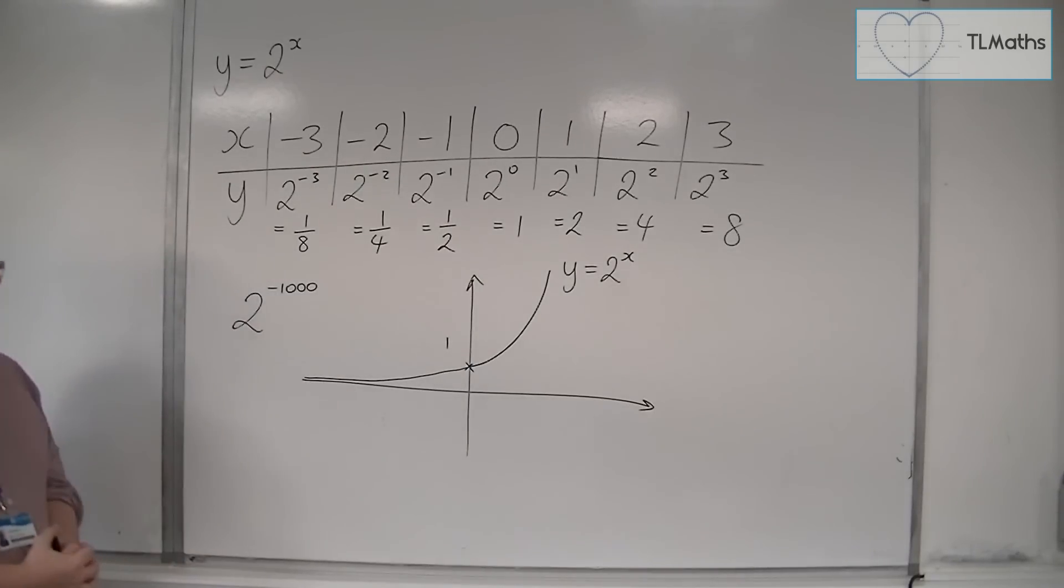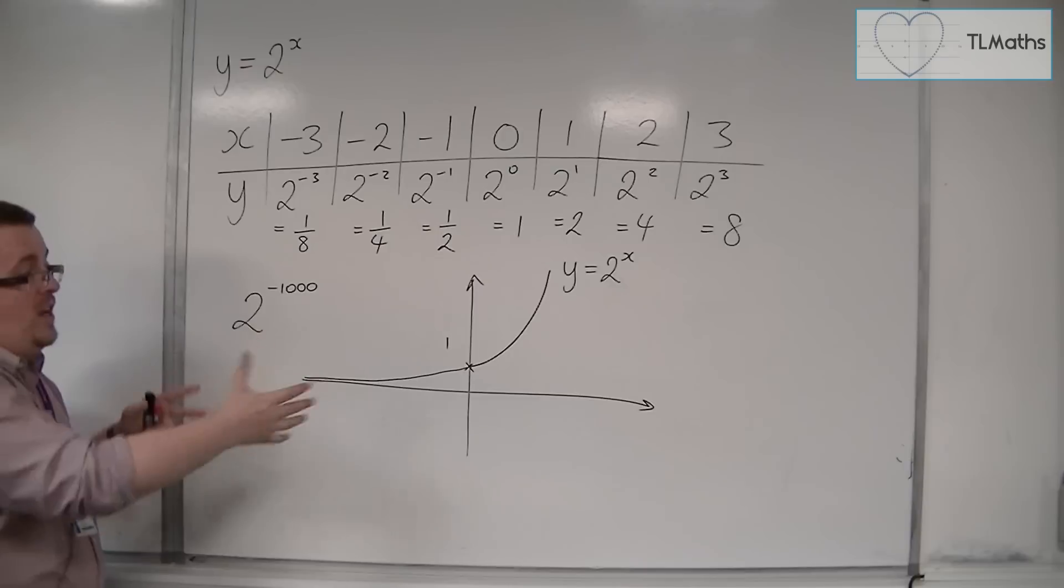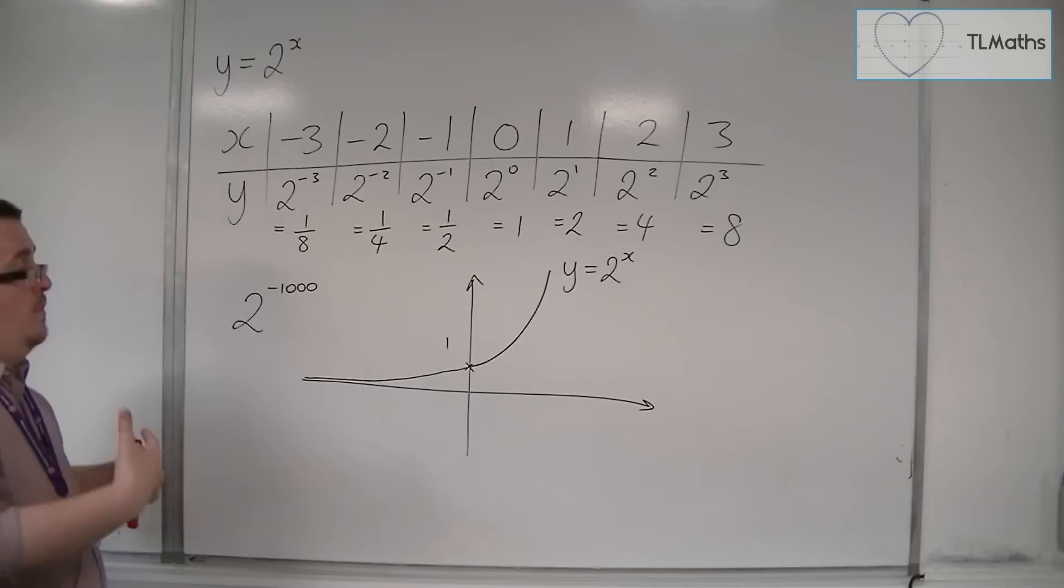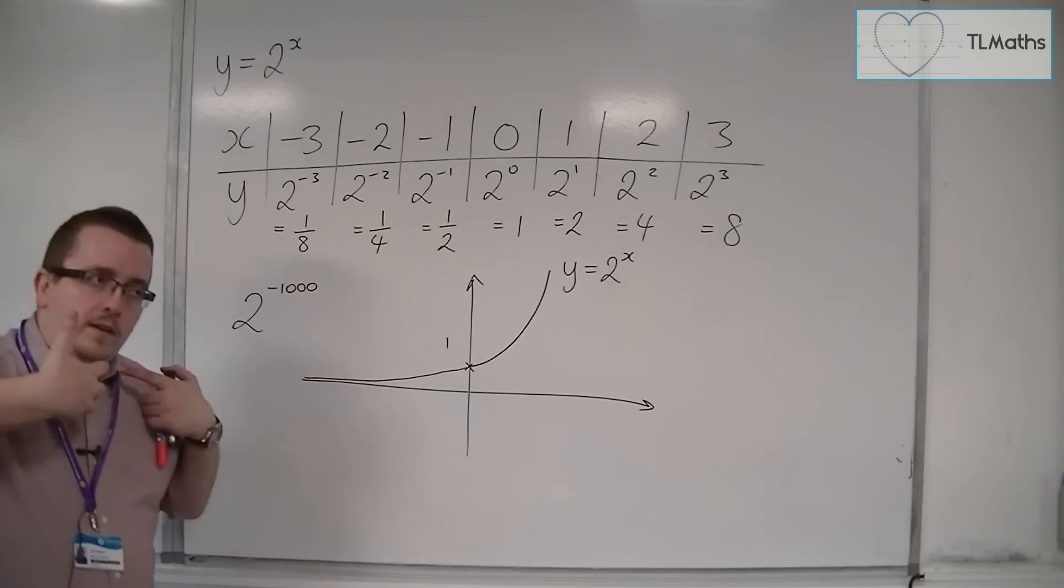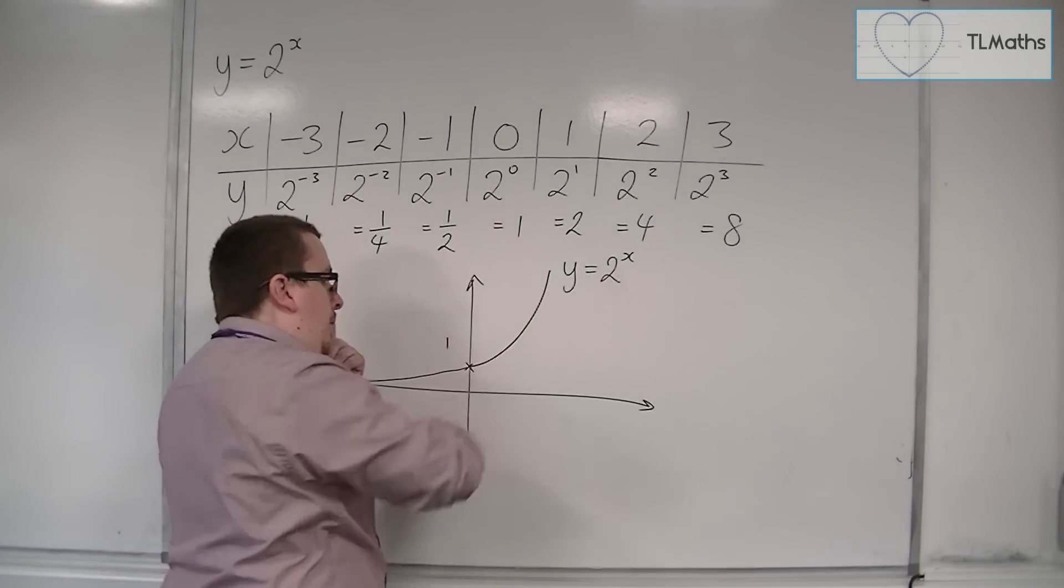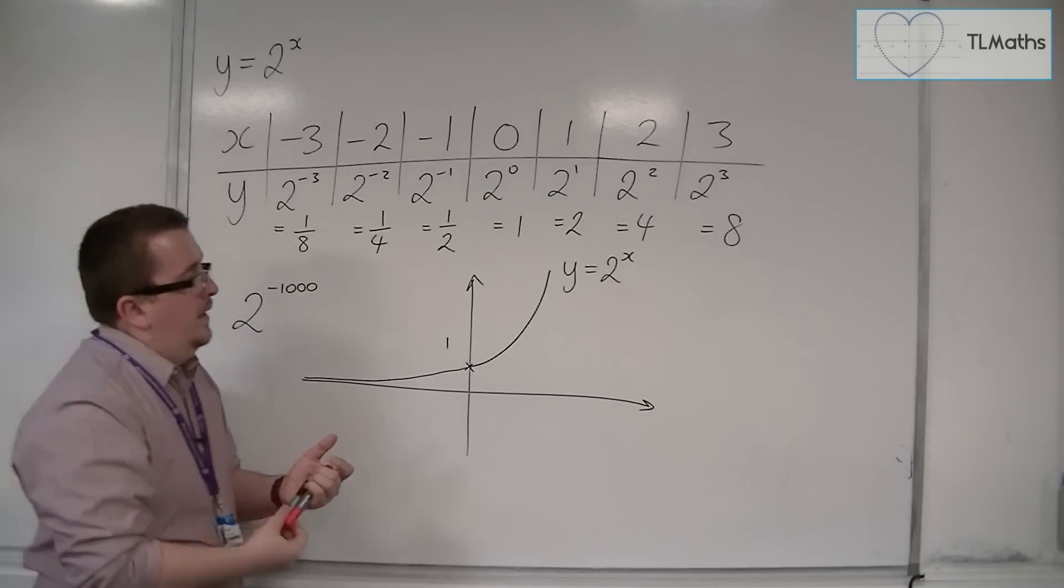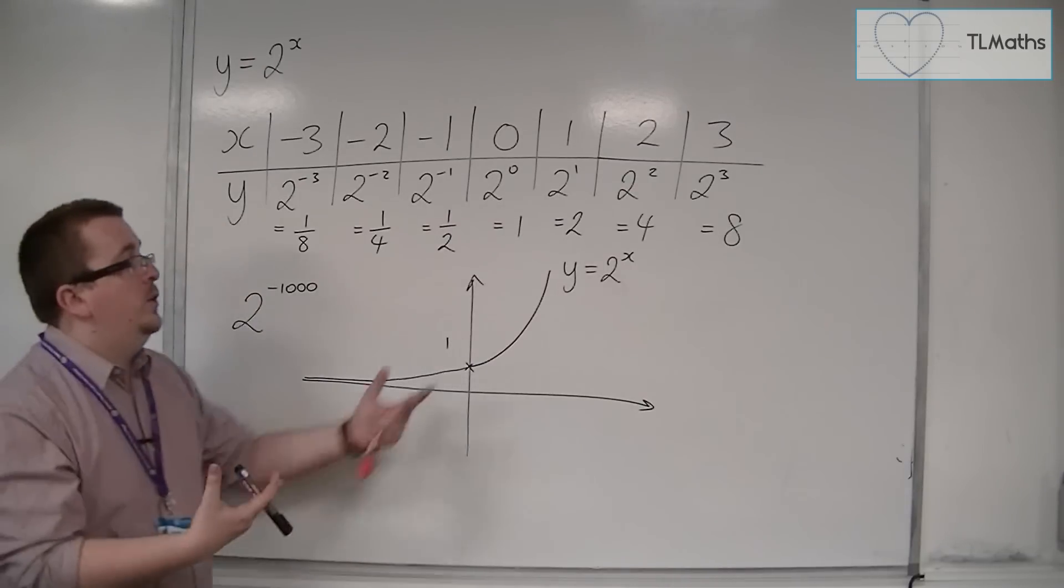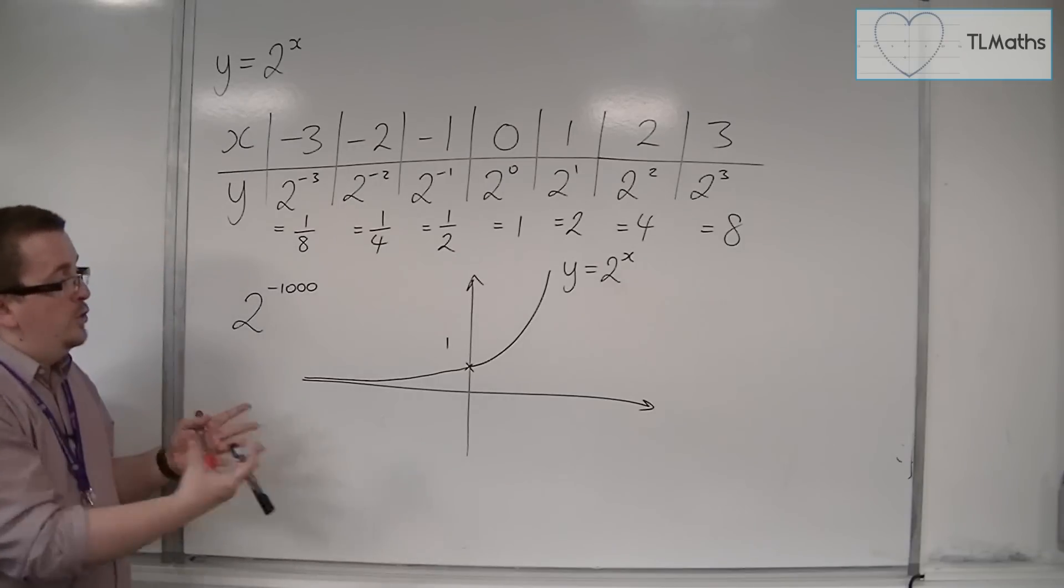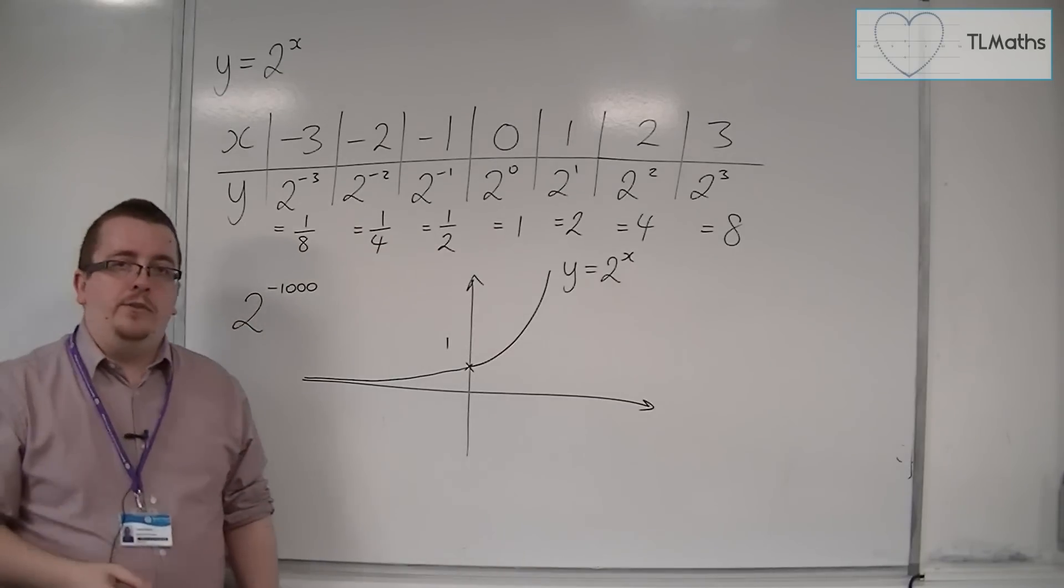So it'll never cross the x-axis. This is a generic shape for what we refer to as exponential curves. You might have heard of the idea of something increasing exponentially quickly. This is the concept of how the curve increases very quickly. These exponential curves, like y equals 2 to the x, y equals 3 to the x, y equals 4 to the x, they look like this. We're going to compare y equals 2 to the x to these different curves in the next video.